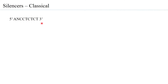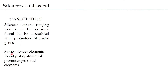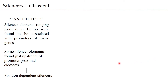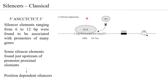However, many variable and different types of sequences have been observed in different silencers. Some silencer elements are found just upstream of or exactly overlapping with the proximal promoter elements. In such cases, these are considered position-dependent silencers — if you remove them from that position and place them elsewhere, they are no longer able to silence transcription.